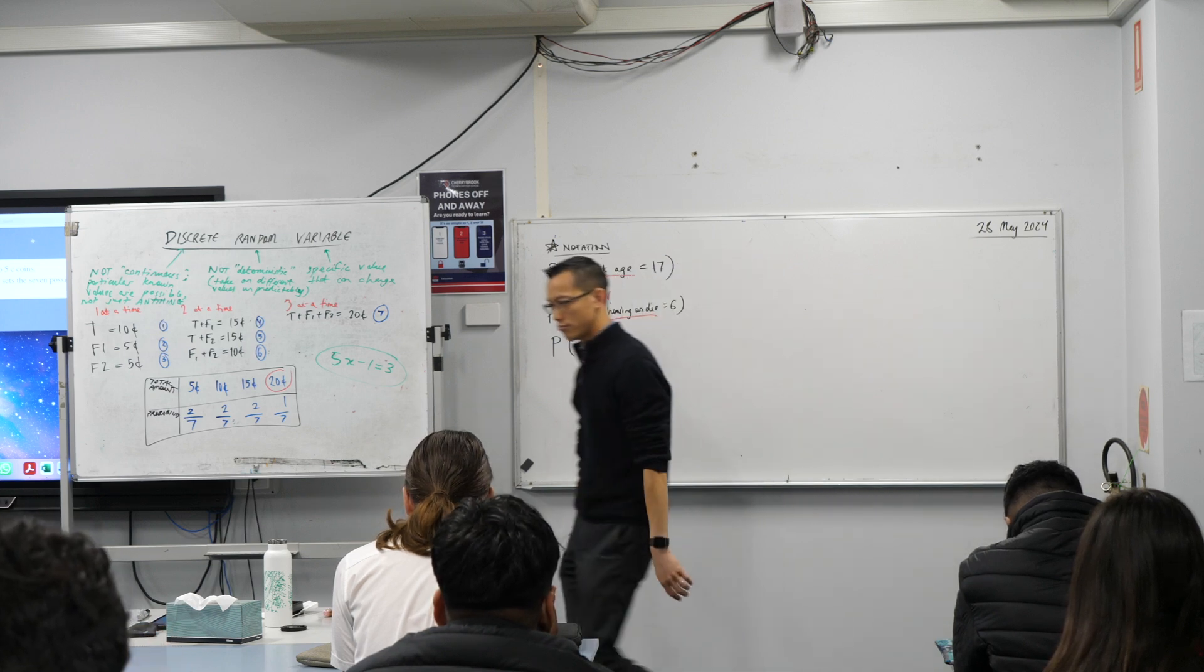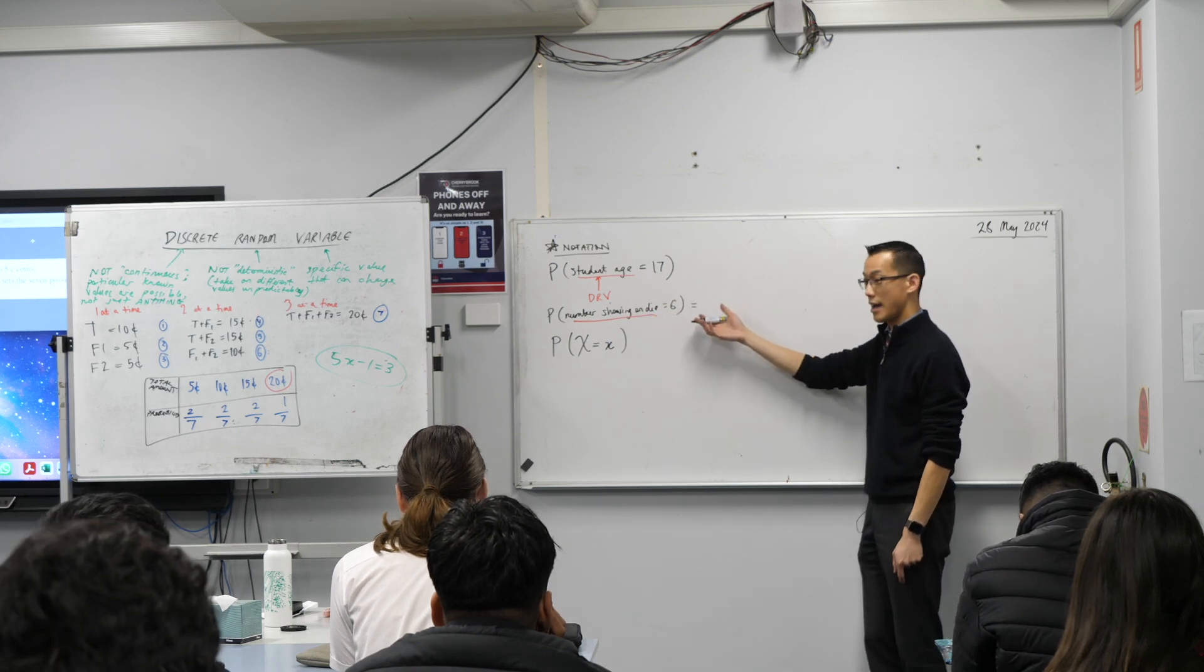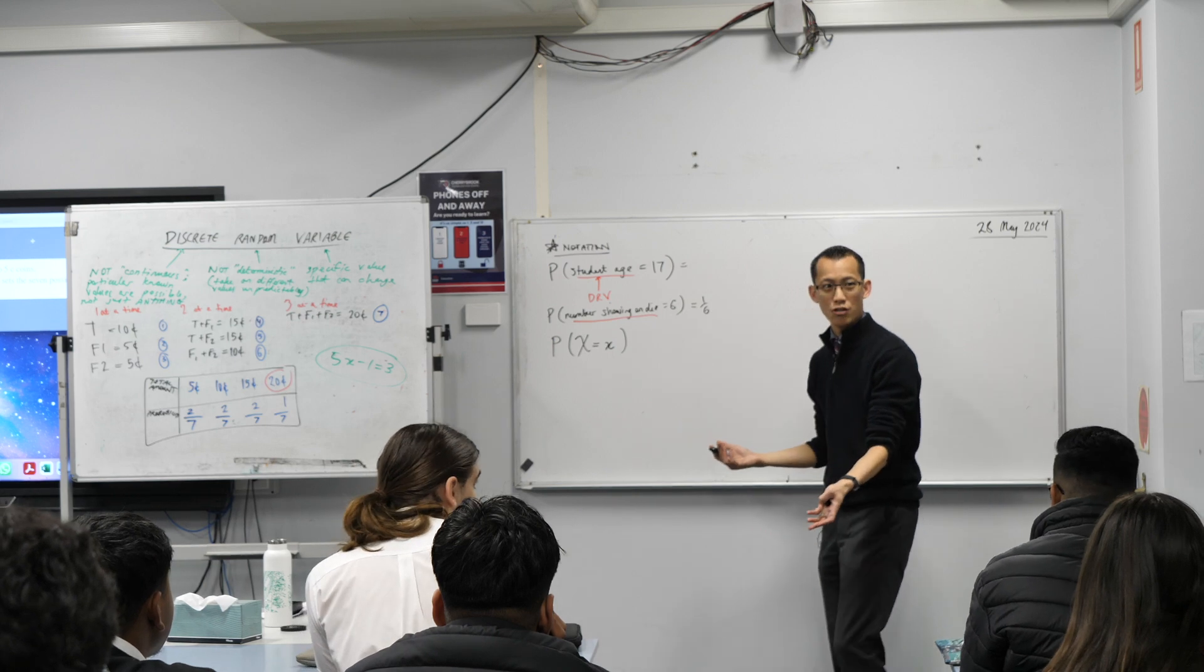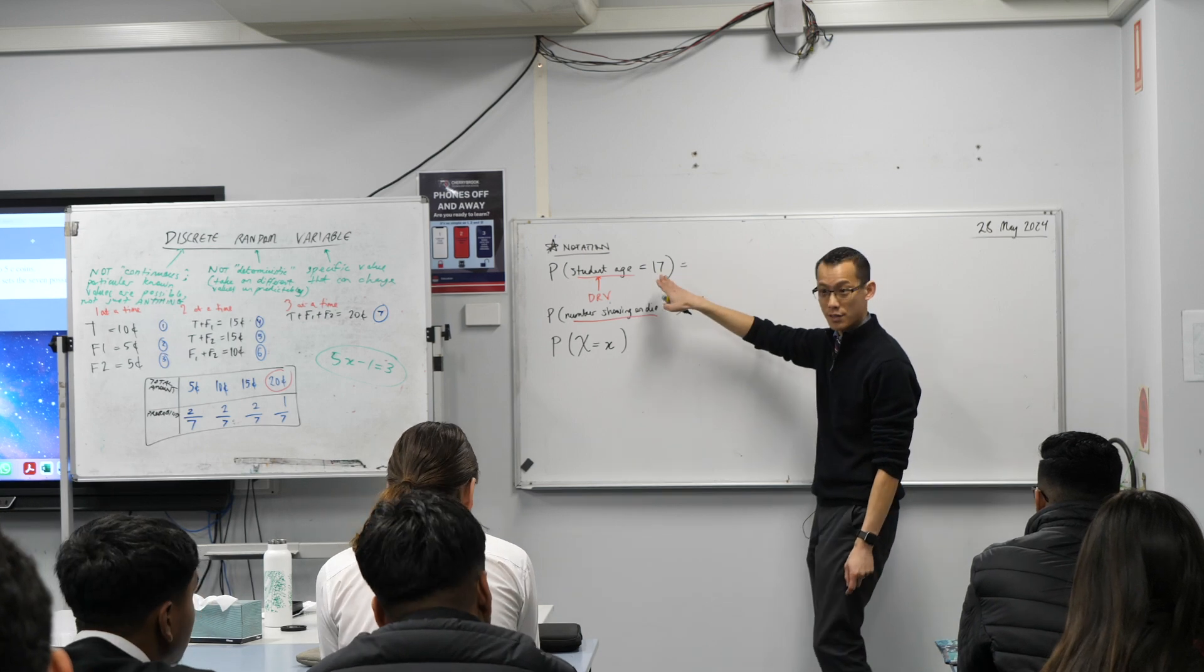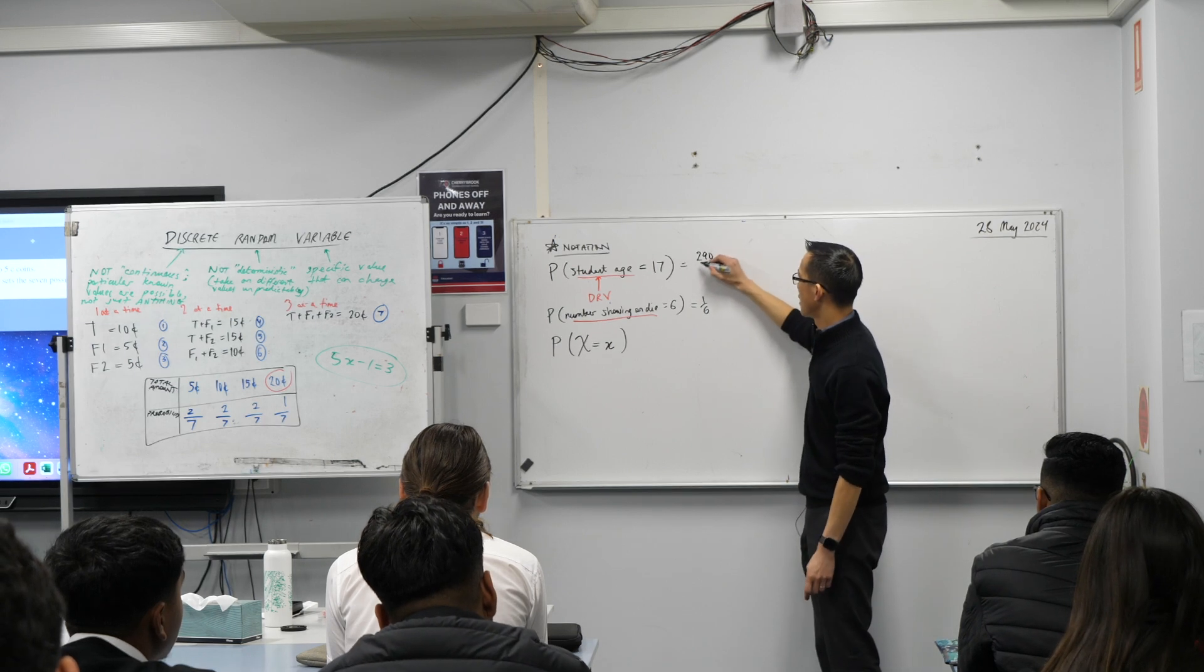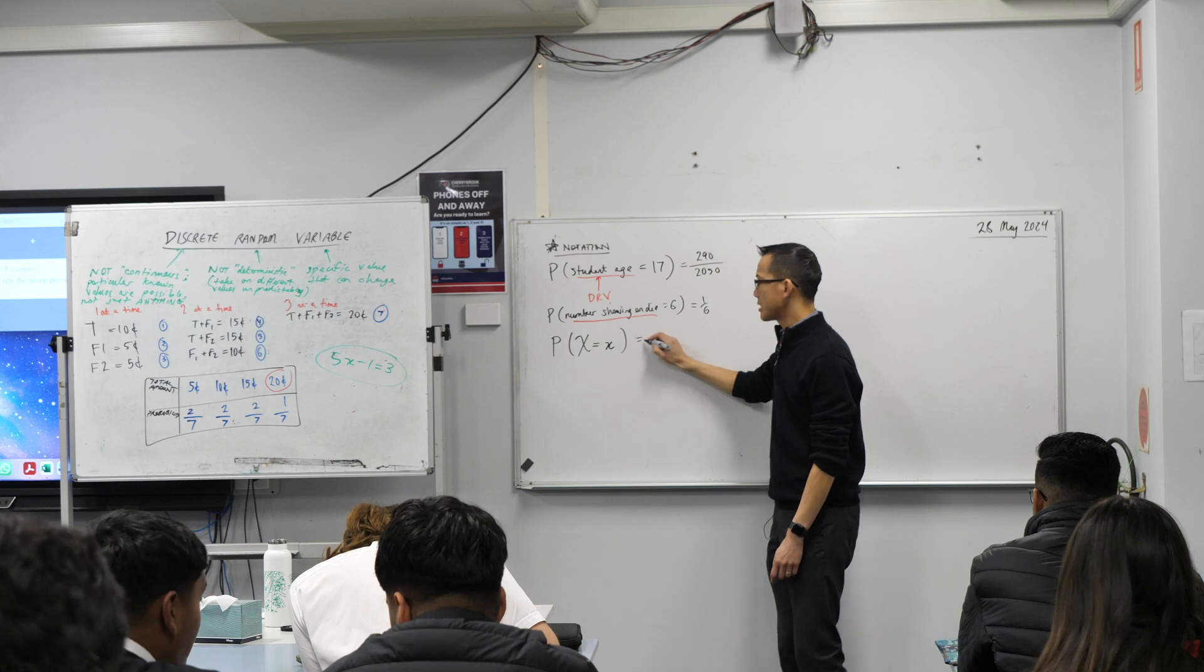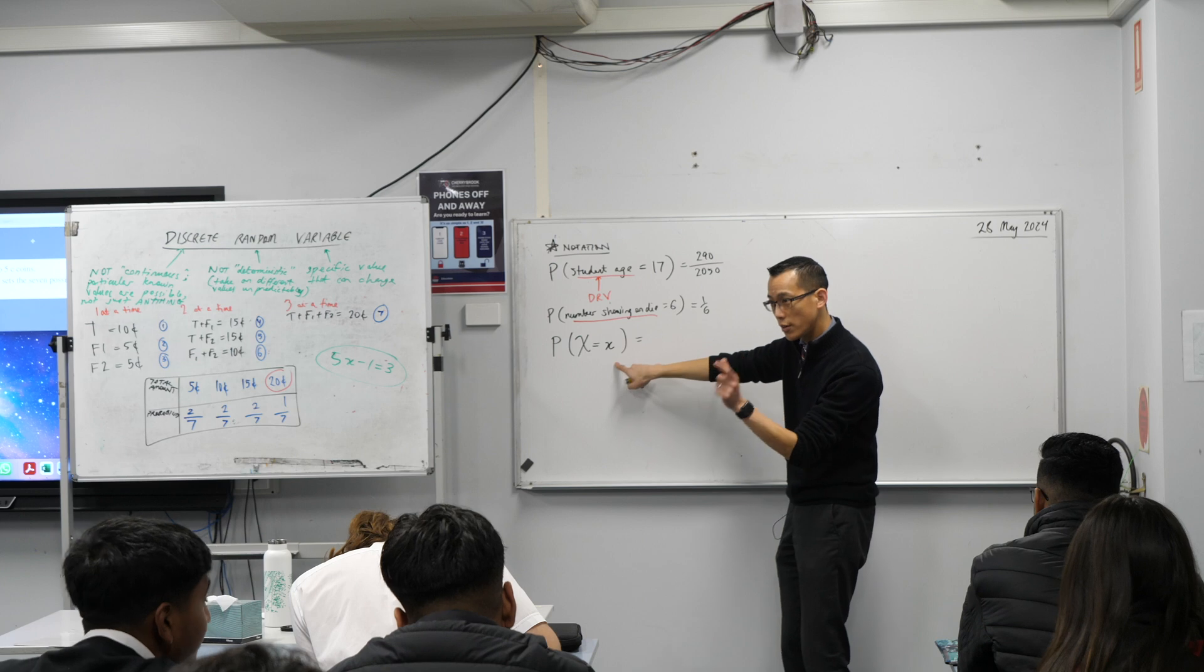So this is going to be equal to some probability. You can work out this one, for example. The probability of the number showing on a die is equal to six would be? One out of six. If we were to say, how big's your grade? 200 and something? But I assume there's some people in other years who have age 17, and there's some people in your year who don't. So maybe I say, let's call it 290. What's the whole school population? 2,000 and something. Maybe 2,050. And this is, well, it just depends on what our discrete random variable is and what specific value we're after.